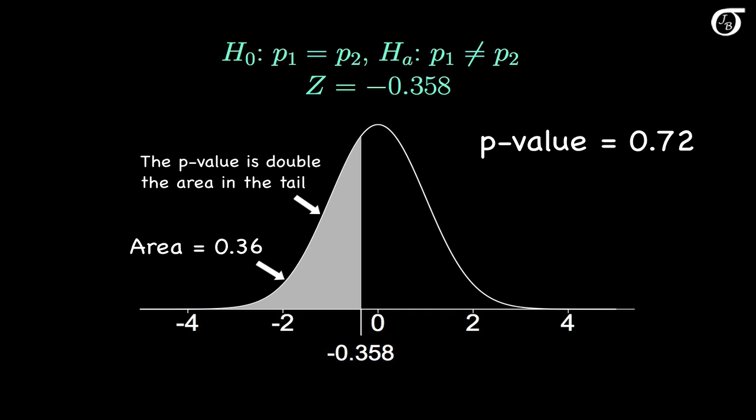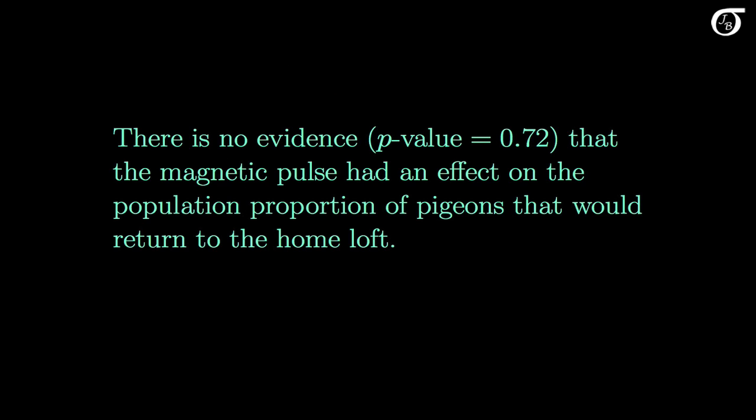That is a large p value, which gives no evidence against the null hypothesis. If the null hypothesis were in fact true, the probability of getting the observed value of the test statistic, minus 0.358, or something more extreme, is 0.72, which is pretty large. So there is no evidence against the null hypothesis — no evidence that the true proportions differ. With such a large p value, it means there is no evidence that the magnetic pulse had an effect on the proportion of pigeons that would navigate to the home loft.